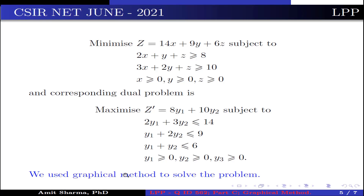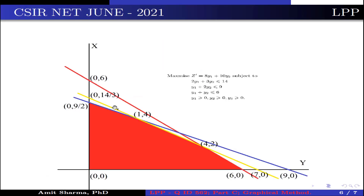Now we have to use the graphical method to solve the problem. For this, we take the inequalities into equation form: the first equation becomes 2y1 + 3y2 = 14, the second is y1 + 2y2 = 9, and the third is y1 + y2 = 6. We plot these lines. The green line corresponds to y1 + y2 = 6, the yellow line corresponds to 2y1 + 3y2 = 14, and the blue line corresponds to y1 + 2y2 = 9.